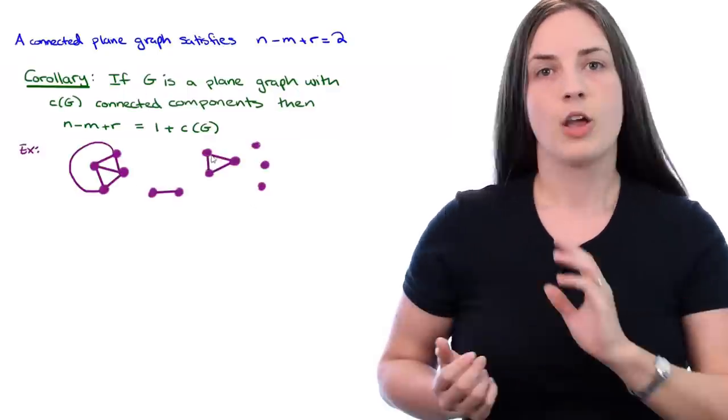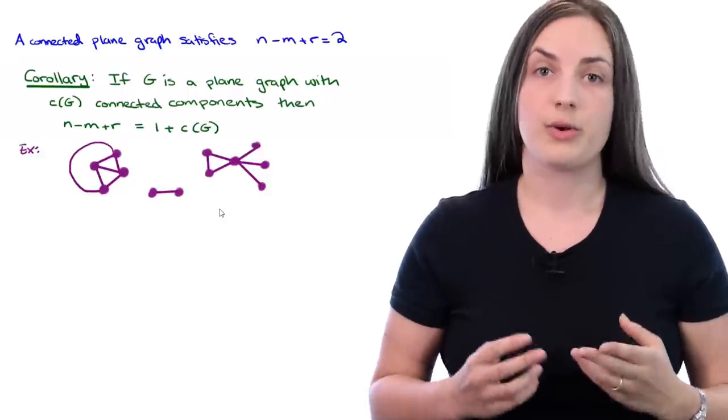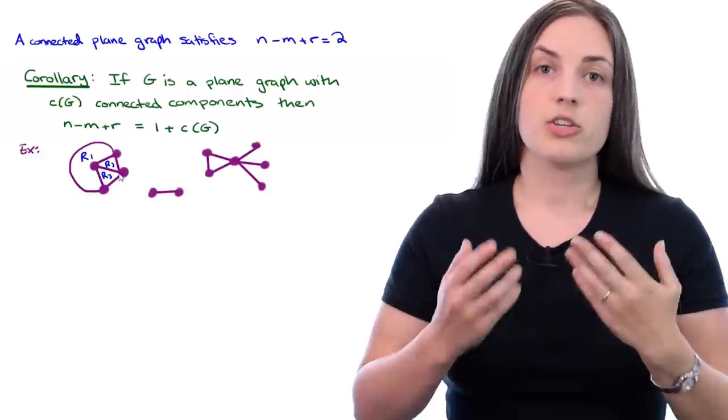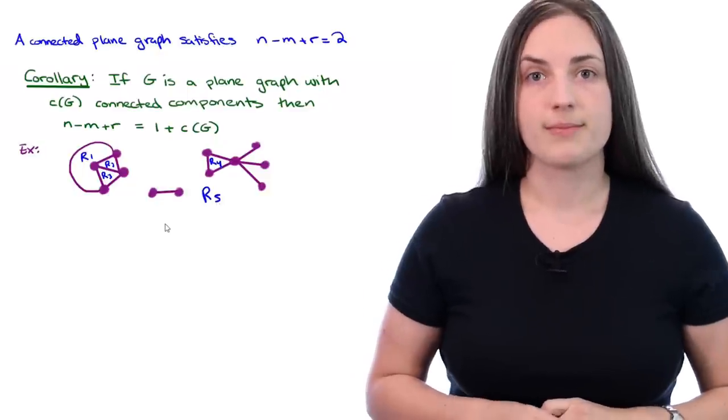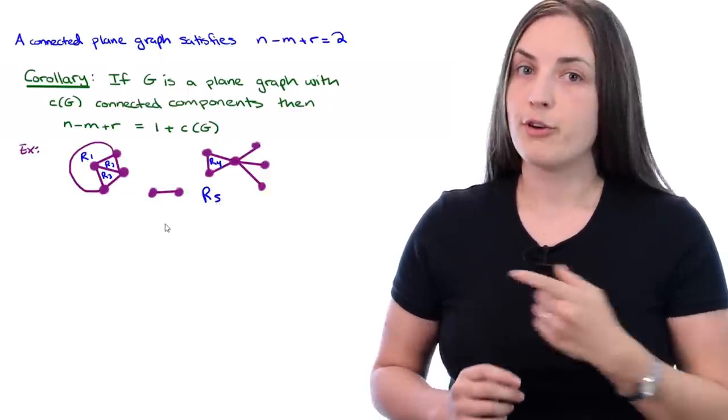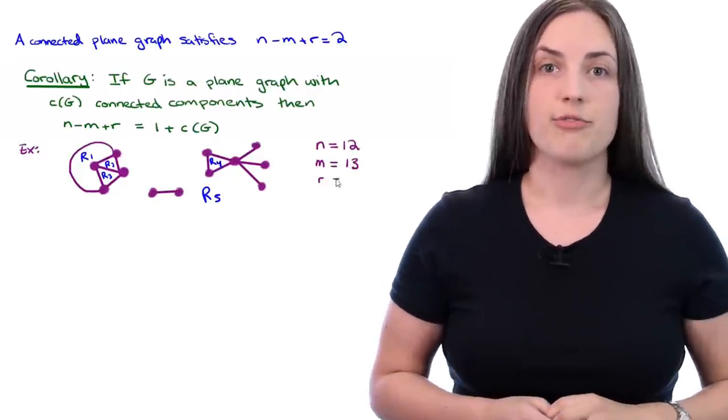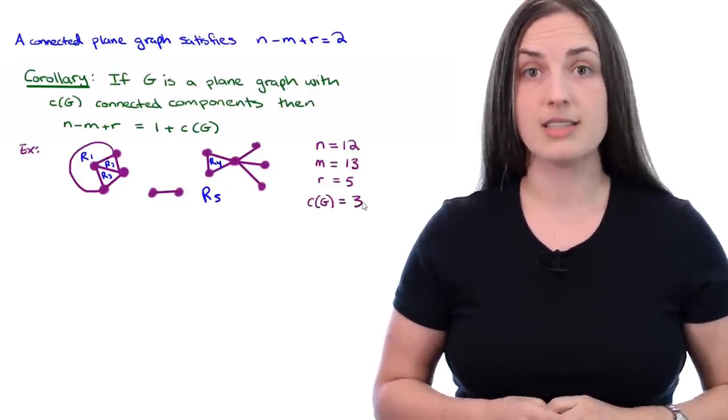Let's take a look at a small example. Here I'll draw it. Notice that it has three connected components, and it has five regions. The number of vertices in this graph is 12, the number of edges is 13, and the number of regions is five. The number of connected components is three.